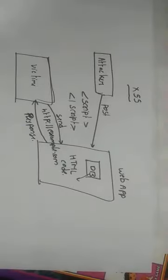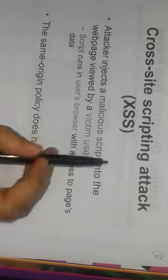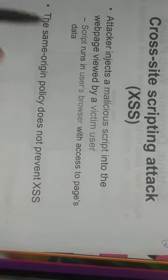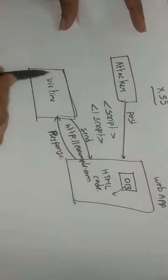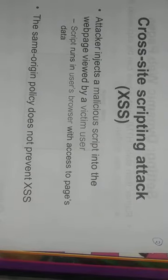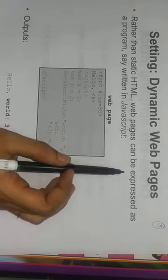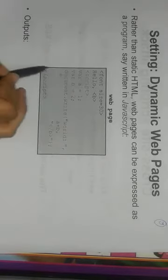In a cross-site scripting attack, the attacker injects a malicious script into the web page viewed by a victim user. The scripts run in the user's browser with access to the web page's data. The same origin policy does not prevent XSS. For example, an HTML or malicious program is injected from web pages. A web page can be expressed as a JavaScript program — for example, a script that outputs 'Hello World' — this is a malicious program.